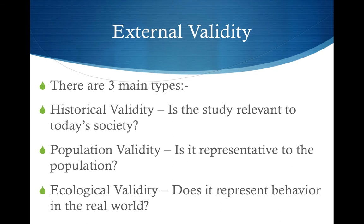External validity has three main types you need to know for the AS exam. There's historical validity — is the study relevant to today's society? Basically, things that were not norms in the past may be norms today, so is it relevant to do a study on them. Another type is population validity — is it representative of the population as a whole? So is the population you used representative of the whole world or not. And the last type is ecological validity, which means does it represent behavior in the real world — basically, is it natural behavior or is it artificial.